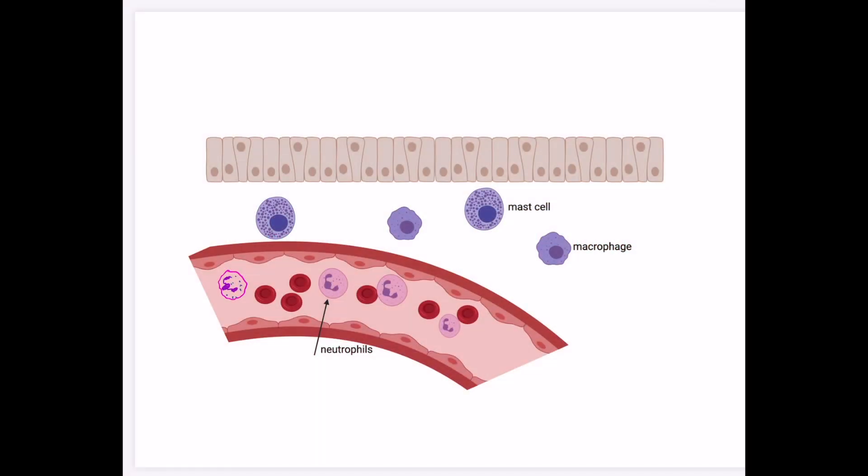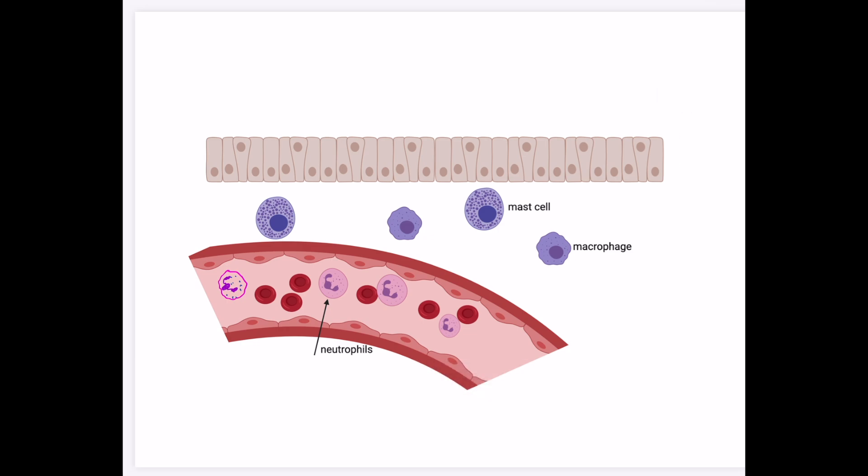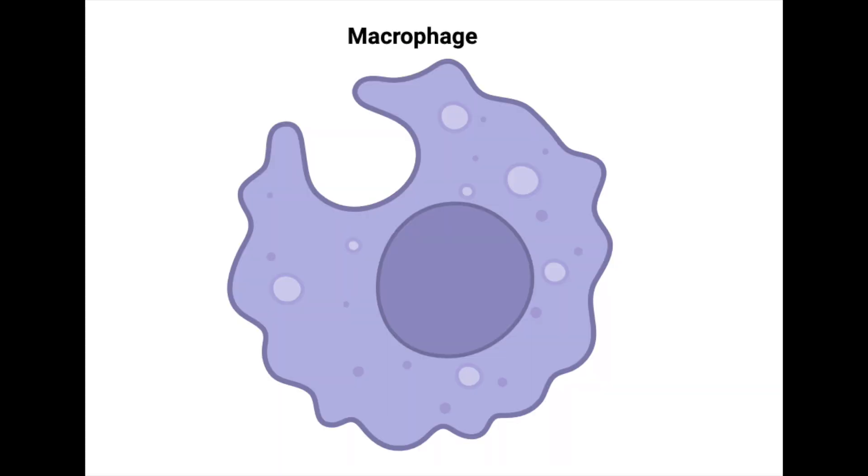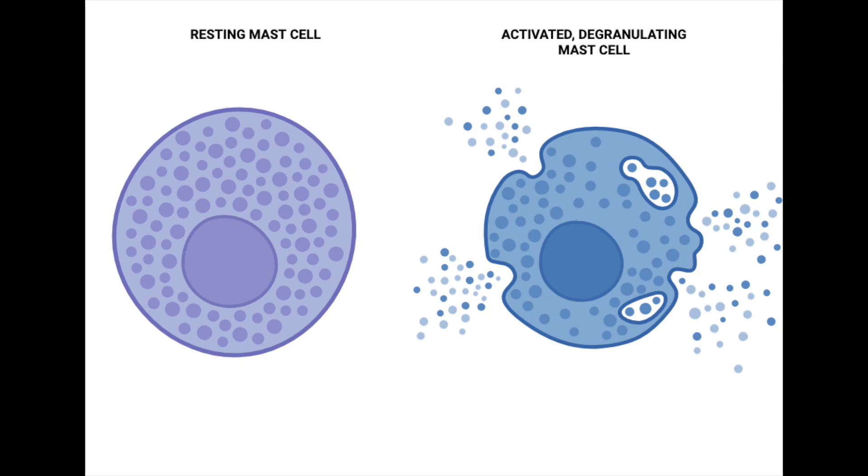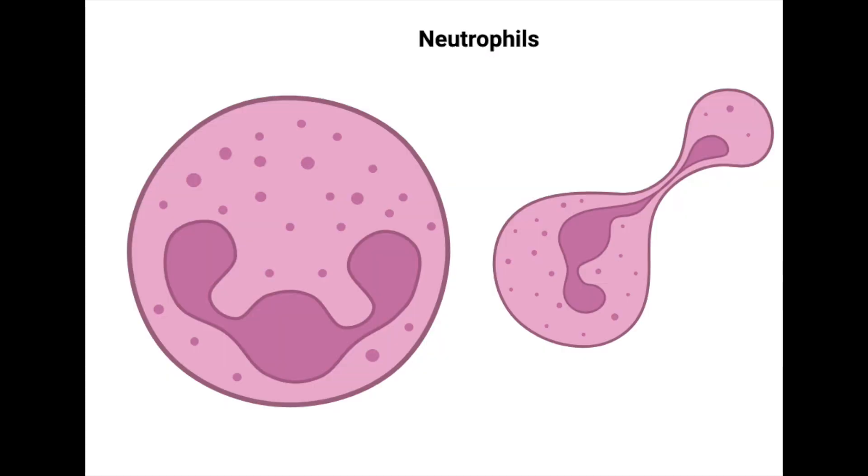So in a typical tissue, we have an epithelial barrier, and underneath the epithelial barrier, we have some sentinel cells. And the sentinel cells here are macrophages and mast cells. The macrophages and mast cells are awaiting any situation in which there's damage or infection in the tissue. The macrophage is a phagocytic cell. A phagocytic cell is a cell that can eat stuff up. Macrophage literally means big eater. But in the blood, there are also phagocytic cells called neutrophils. They are not found in the tissue typically, not unless there's some insult.